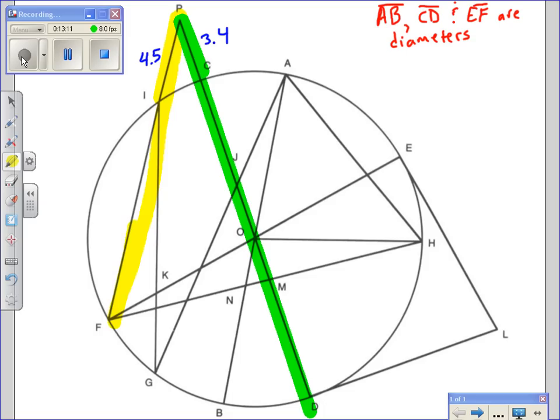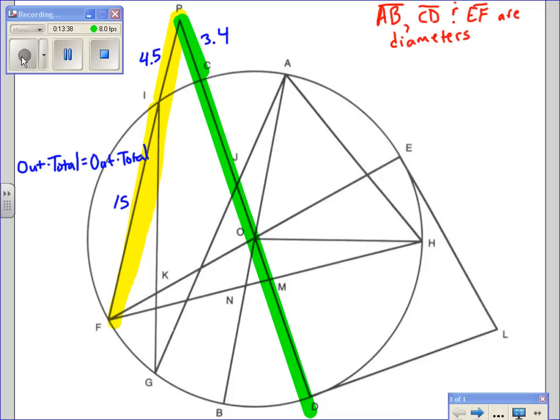And we've been given that IF was 10.5, which makes this whole thing a total of 15. So when we have this idea of two secant lines meeting up at a point outside of the circle, how I always do it is, what part is outside the circle times the total of that side equals the outside part times the total of the other secant line. So in our case, it would be PI times PF equals PC times PD.